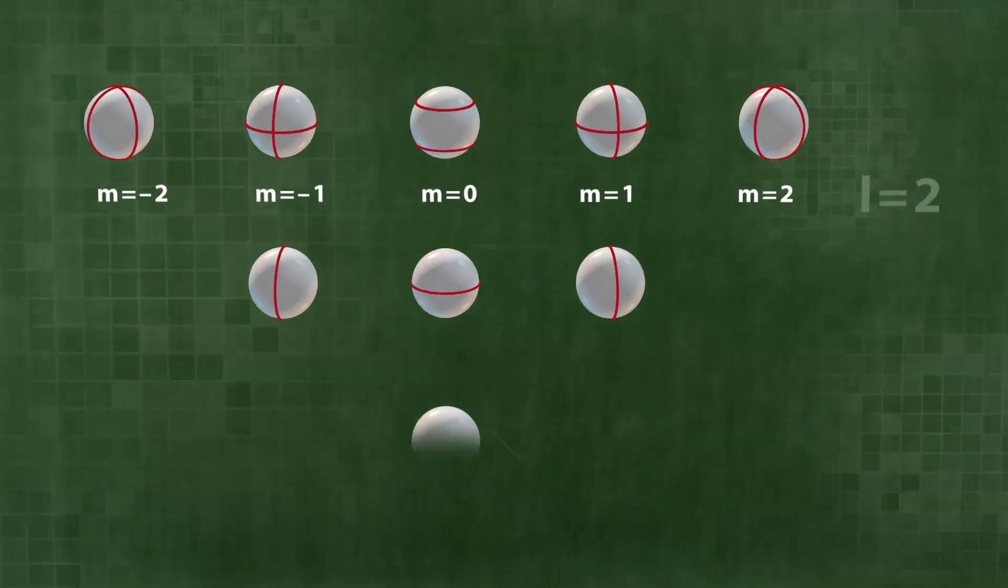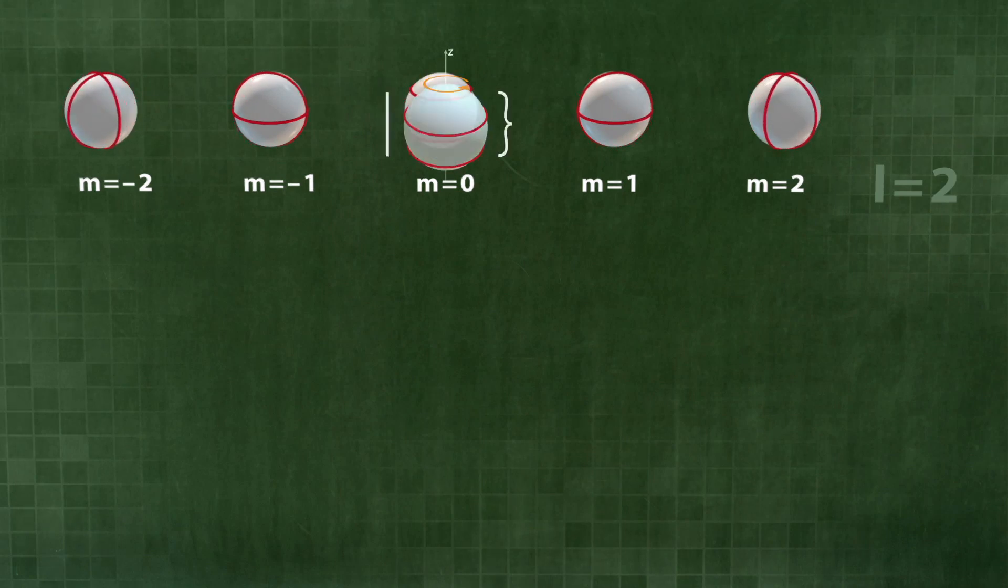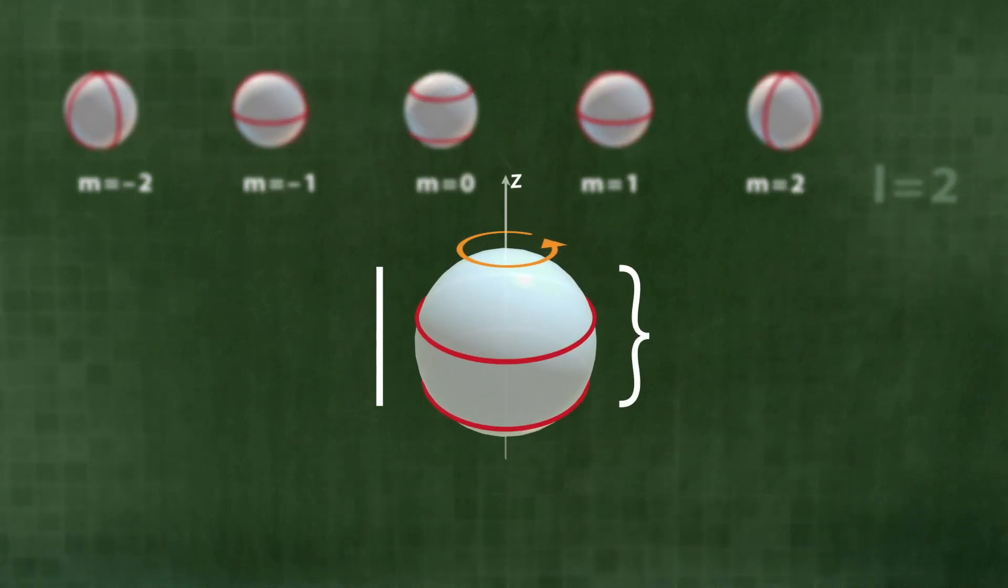To do this, let us take L equals 2 as an example. The most symmetric state, M equals zero, is completely rotationally invariant.